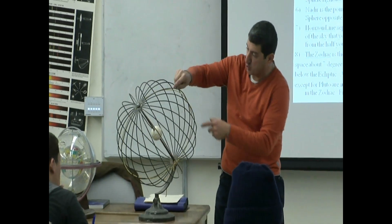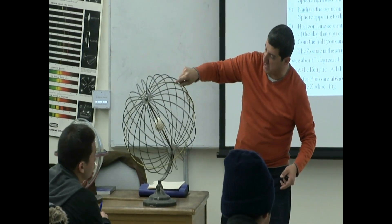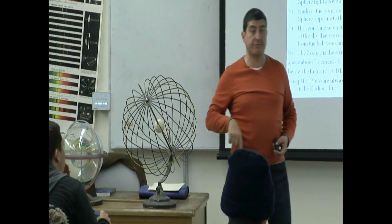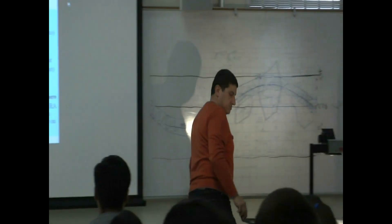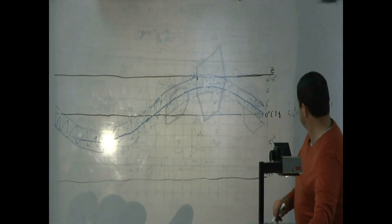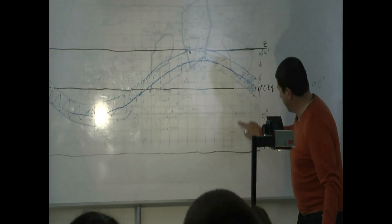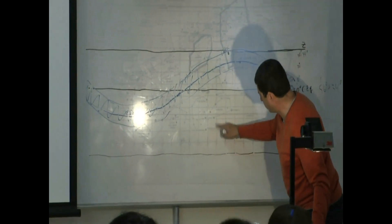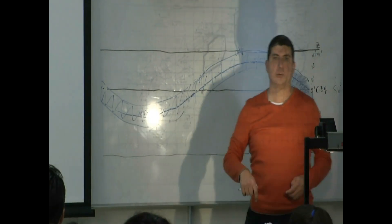There are 24 RA divisions — you can count all 24 of them, going from 0 through 24, as you can see on the diagram.